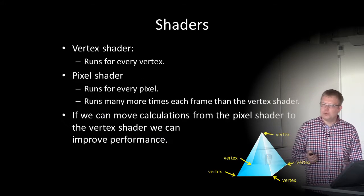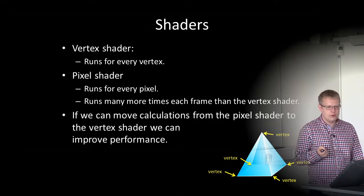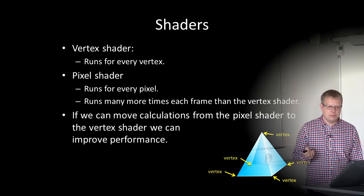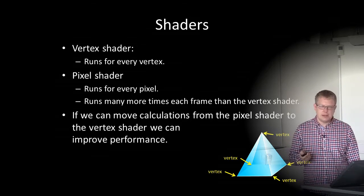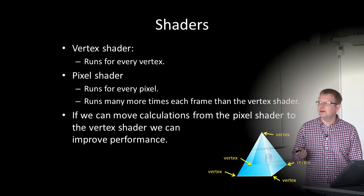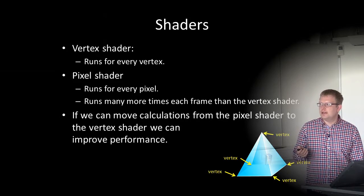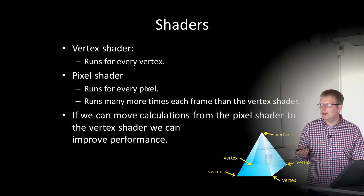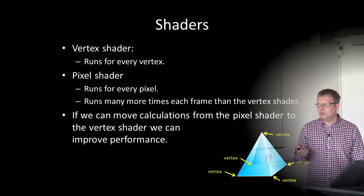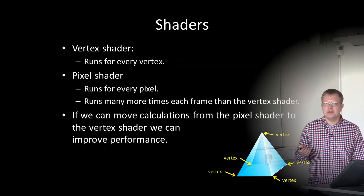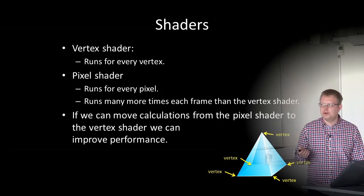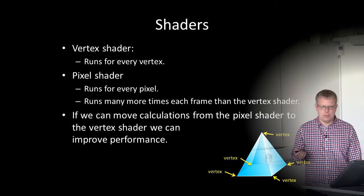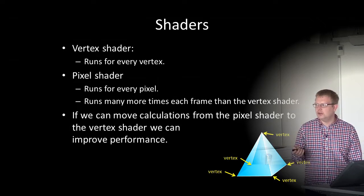The vertex shader runs for every vertex in the model and the pixel shader runs for every pixel. Since we have many more pixels than vertices, the pixel shader runs many more times per frame than the vertex shader. So if we can move calculations from the pixel shader to the vertex shader, we can improve the overall performance of our rendering engine.